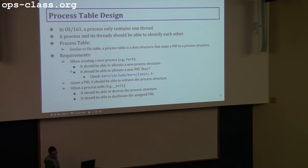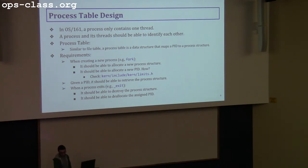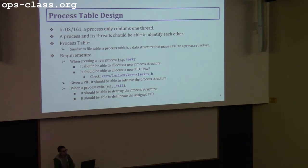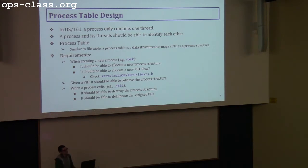For process table design: every process in OS/161 contains only one thread, and a process and its thread should be able to identify each other. The process table is similar to the file table, but I won't call it just an array — you should decide how to design your data structure. The process table is a data structure that maps PID to a process structure. You can go with an array or a linked list. A linked list is much better because you won't waste space — for the file table an array made sense since there are only 64 entries, but for processes a linked list is a better design option, though it's up to you.